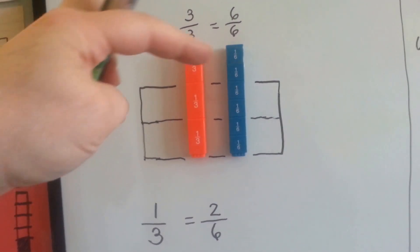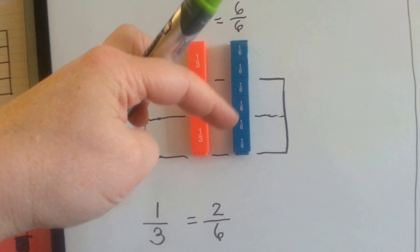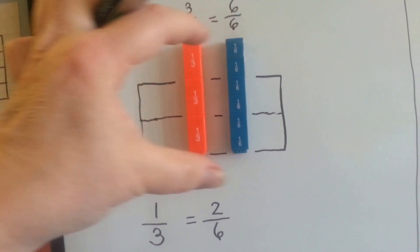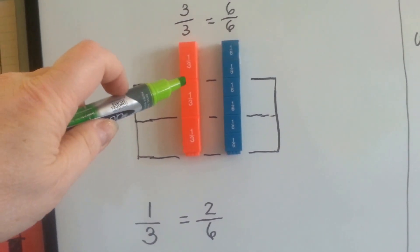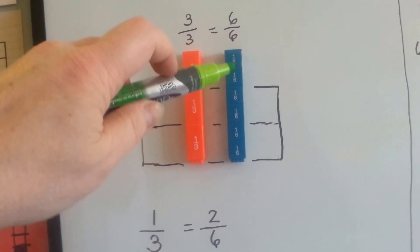And we can compare it to 1, 2, 3, 4, 5, 6, and they're the same. They're both one whole. They're split differently. There's 3 in this one and there's 6 in this one.